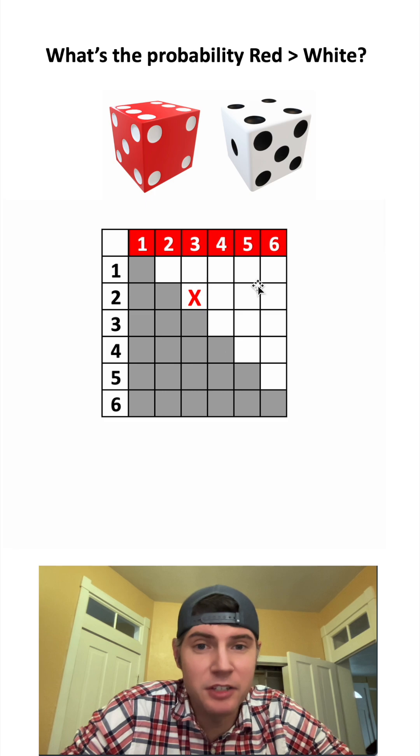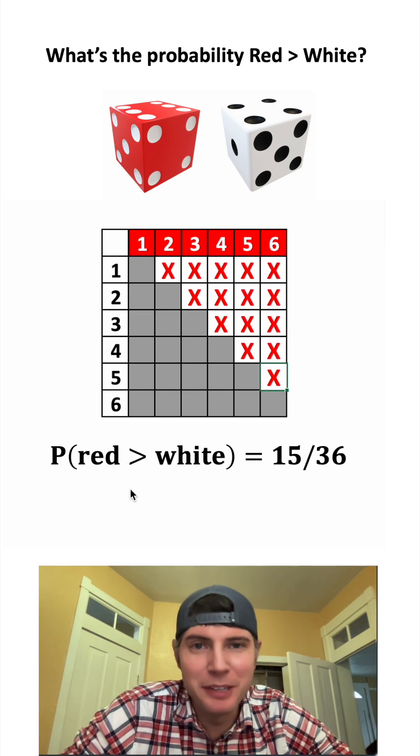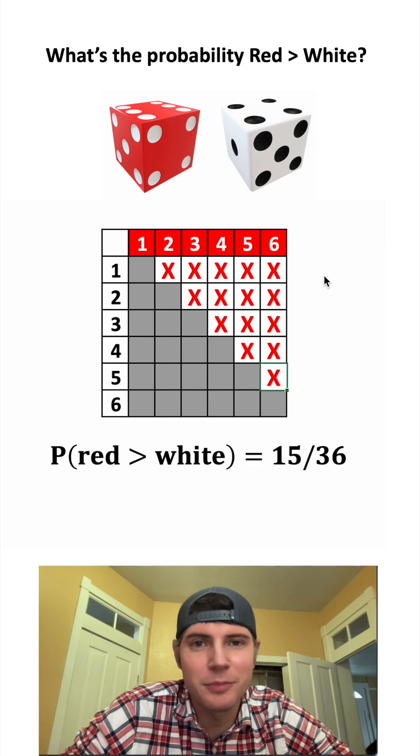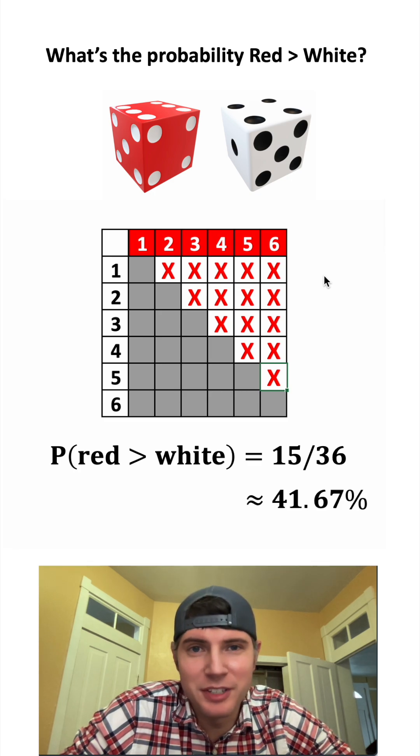For all these remaining spots, the red one is going to be greater than the white one, so we can mark all of those. So the probability that red is greater than white is these 15 successful outcomes divided by the 36 total outcomes, which is approximately 41.67%.